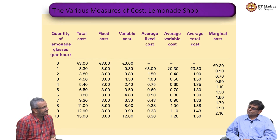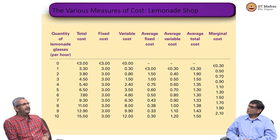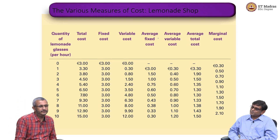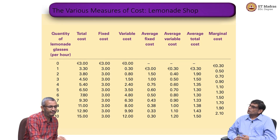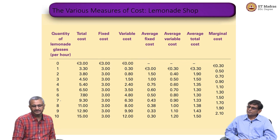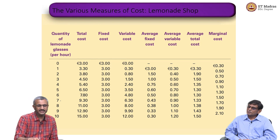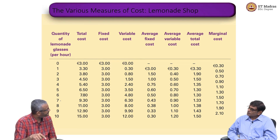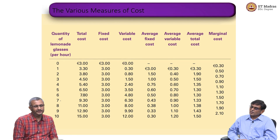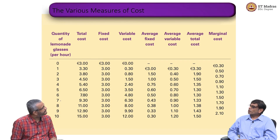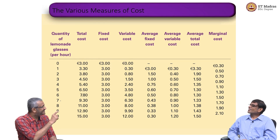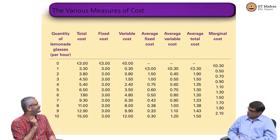A lot of decisions are made at the margin. If I am producing 3 glasses per hour and I want to decide whether to increase output to 5 or 6, at the margin — what is my cost? So we introduce the concept of marginal cost. Marginal cost also keeps increasing because the variable cost keeps increasing, so the marginal cost is pulled up. Variable cost may not increase at the same rate as the number of items produced — per item it might actually be reducing at some point.